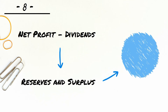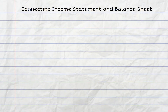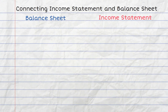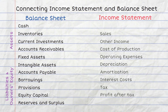Dividends are not an expense, so they do not show up in the income statement. A provision for dividend to be paid is shown in the liabilities side of the balance sheet. Let us summarize all these connections in a single diagram that links items in the income statement with the items that are impacted on the balance sheet.